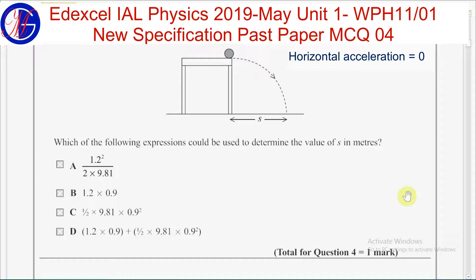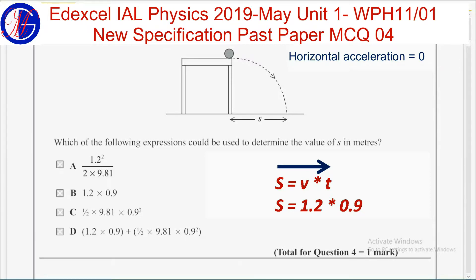Therefore, we can simply apply s equals v times t, where v is 1.2 meters per second and t is 0.9 seconds. So the answer should be B.